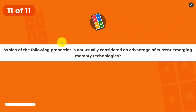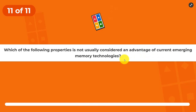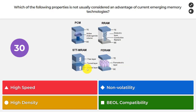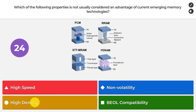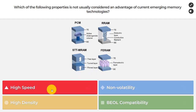Our last question: which of the following properties is NOT usually considered an advantage of current emerging memory technologies? High speed, non-volatile, high density, or back-end-of-line compatibility? The one that is not primarily considered an advantage is high speed.